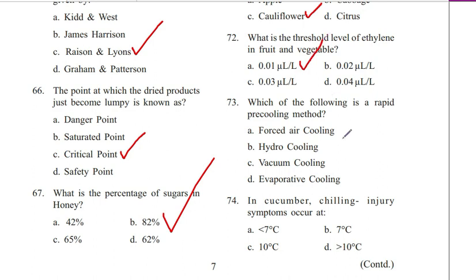Question 73. Which of the following is a rapid cooling method? Forced air cooling, hydro cooling, vacuum cooling, or evaporative cooling. Answer is hydro cooling, B.